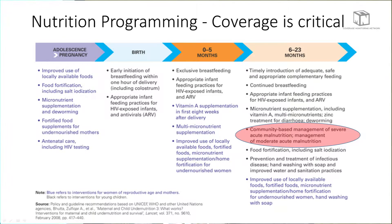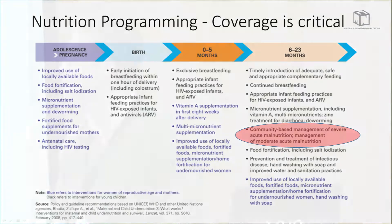The densely worded diagram presents all of the different recommended evidence-based interventions throughout the life cycle. The community-based management of severe acute malnutrition is just one part of the overall program.